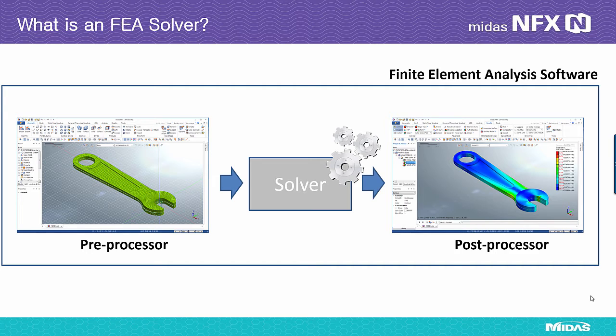The job of the pre-process is to create the model, to prepare the geometry and the mesh, and to define the properties, the material, the loads and the boundary conditions. Then a text file which includes all those data under a specific standard format is generated and sent to the solver.